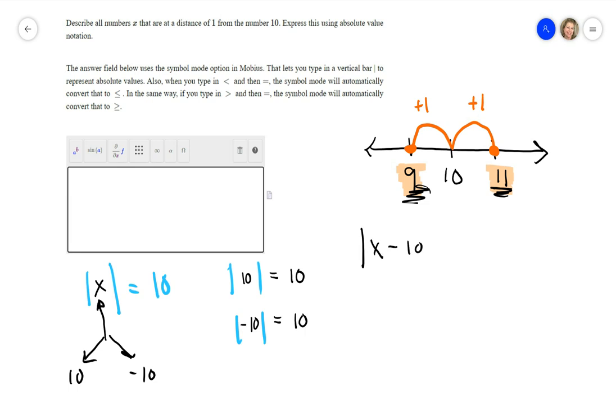The absolute value of x minus 10 is equal to 1. Now, if I solved that, you would say, okay, this stuff inside the absolute value, the x minus 10, either that x minus 10 was a positive 1, or that x minus 10 was a negative 1.